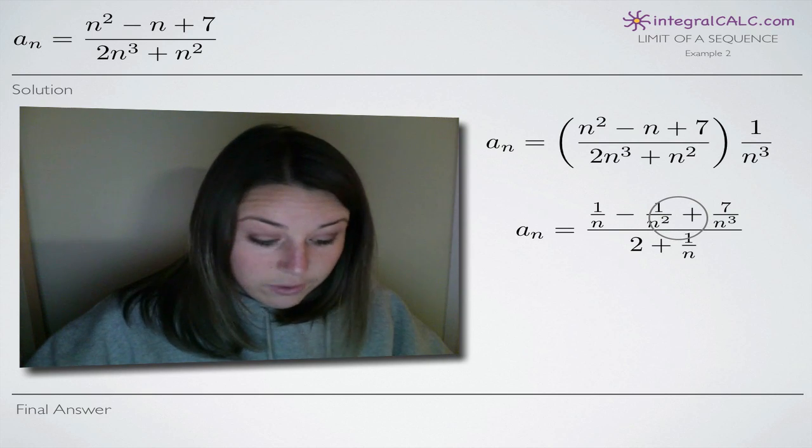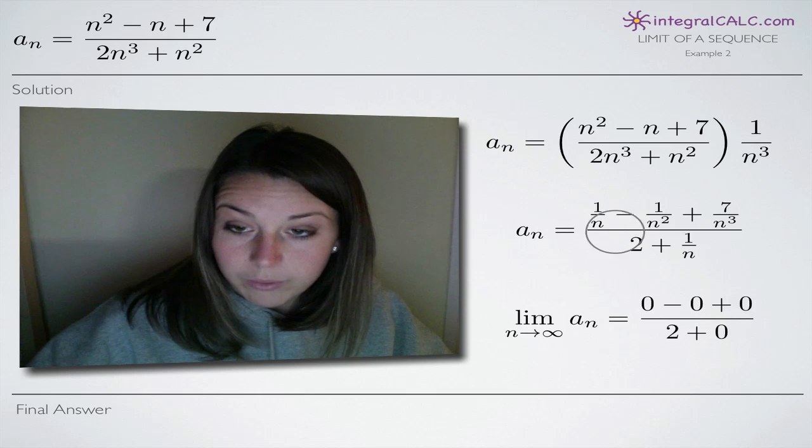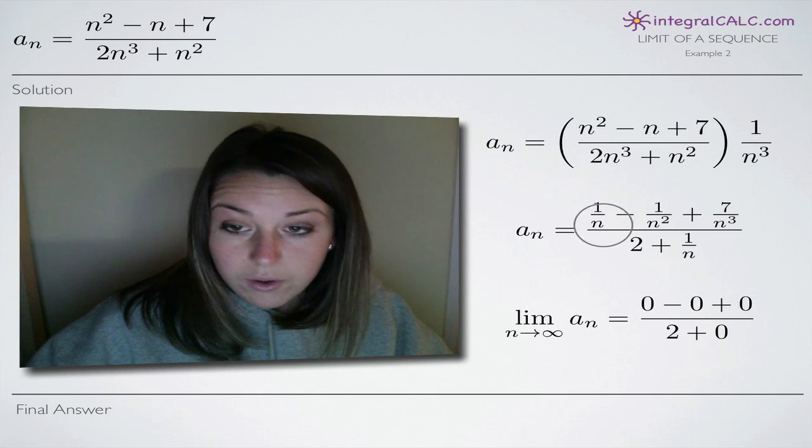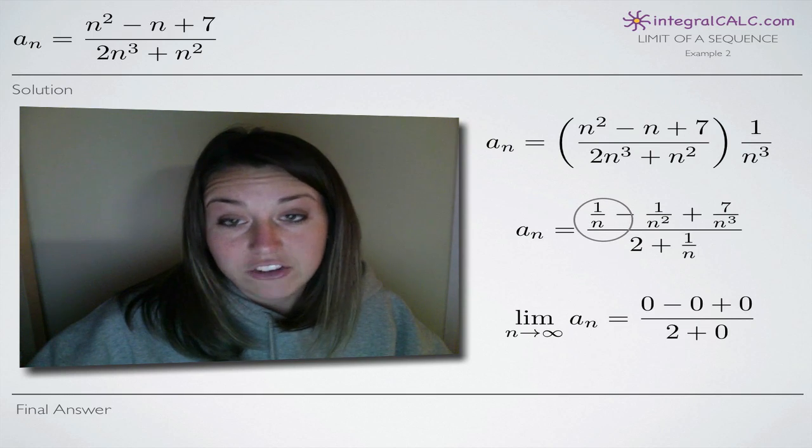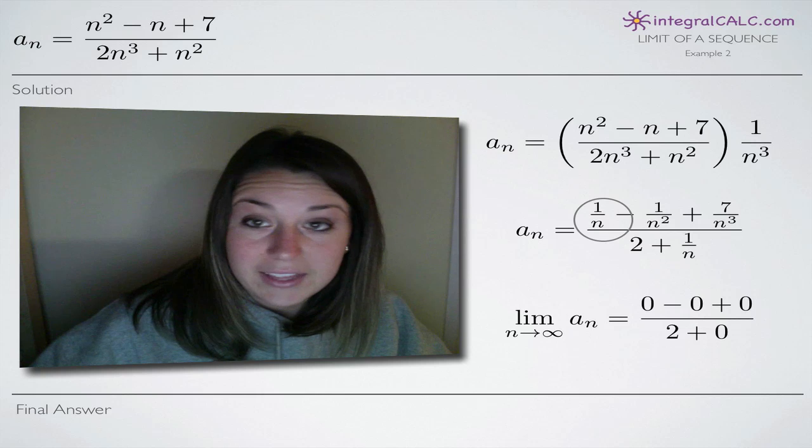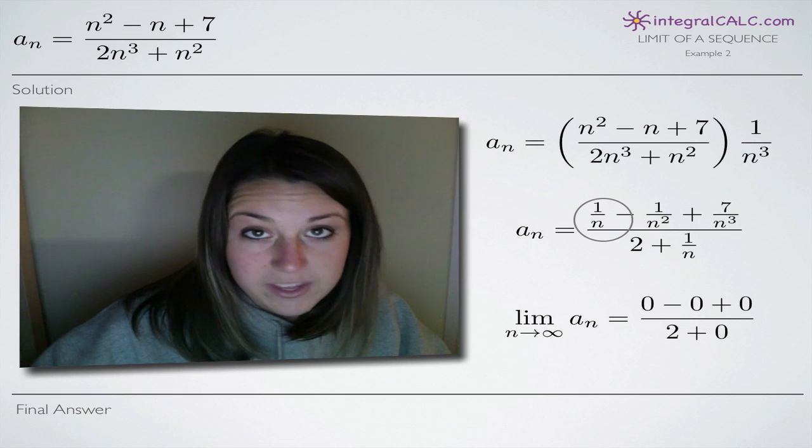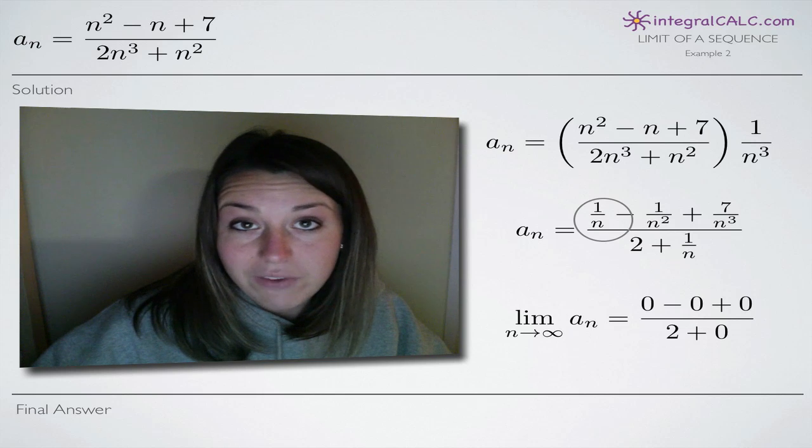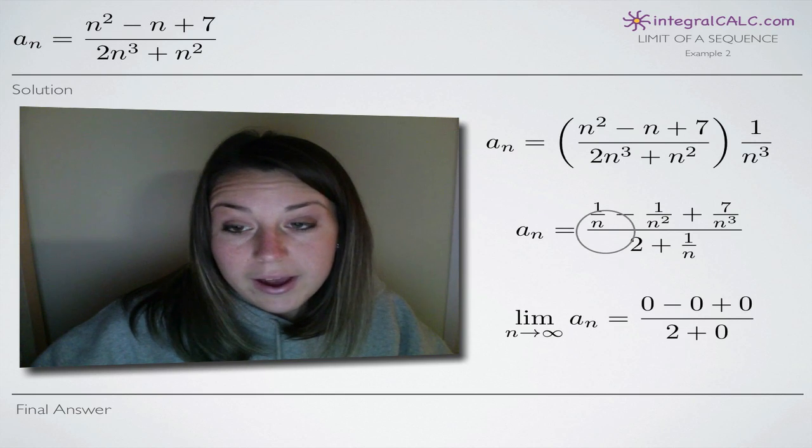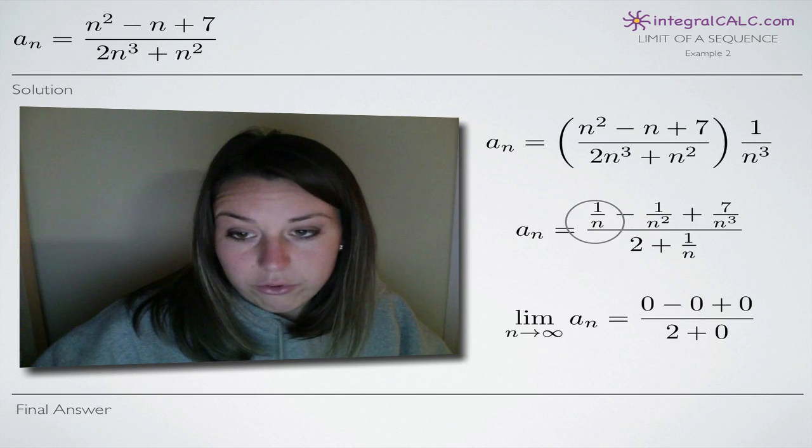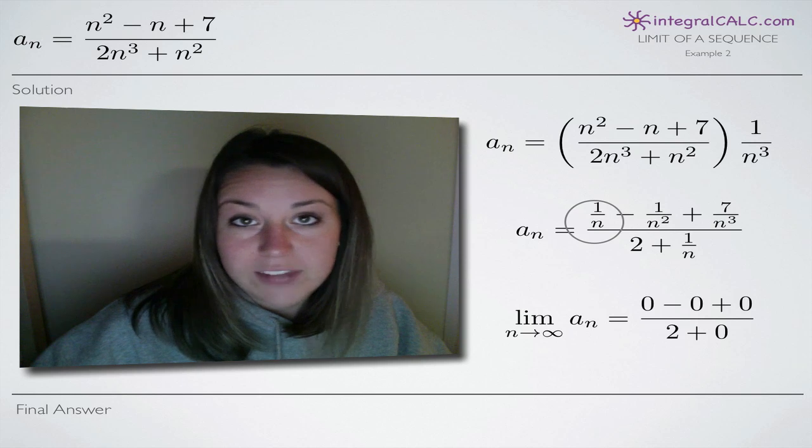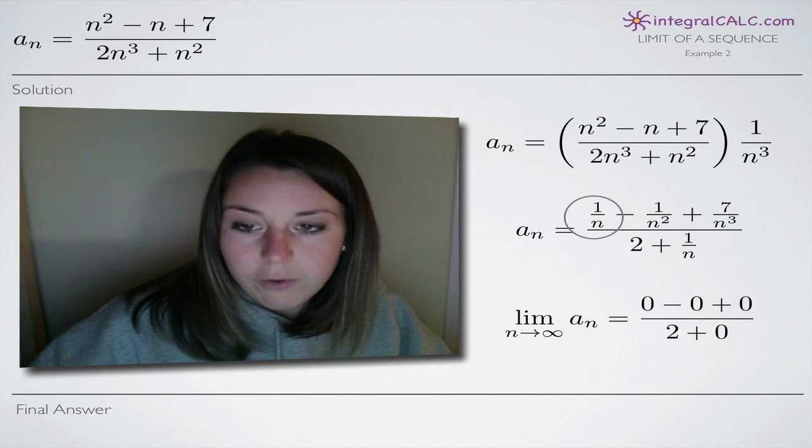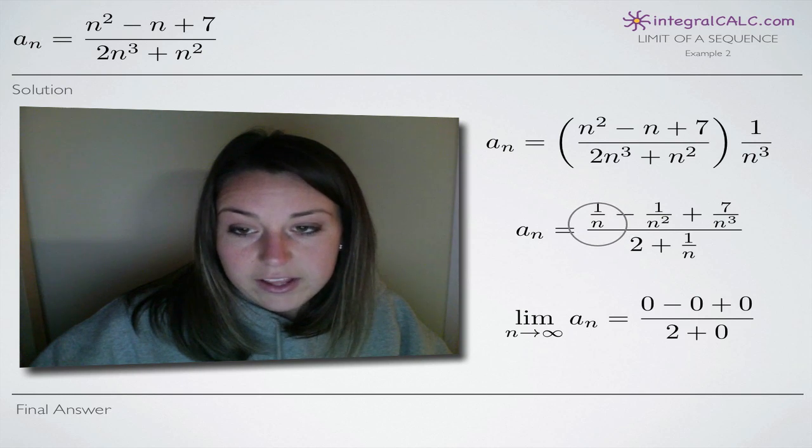So that's why we're going to do it and if you have trouble remembering what 1 divided by infinity actually is, you can always plug in like 1 divided by 10 million or something into your calculator and you'll get a very, very small number or it might even round it to 0 for you and you'll see that it's 0. So if you're taking a test and you can't remember, you can always plug in a very large number for n to see what you get.